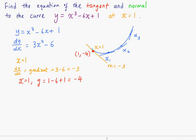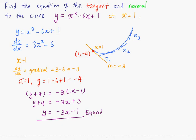To find the equation of the orange line, we use y - y₁ = m(x - x₁), so y - (-4) = -3(x - 1). We simplify this to get the equation of the tangent.